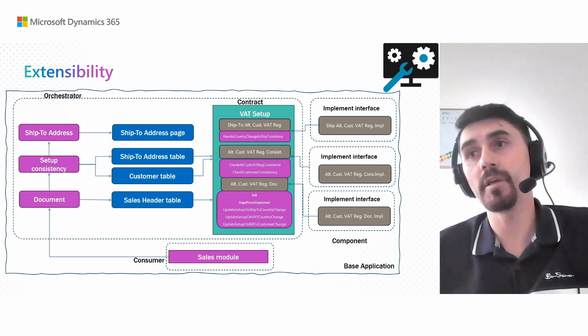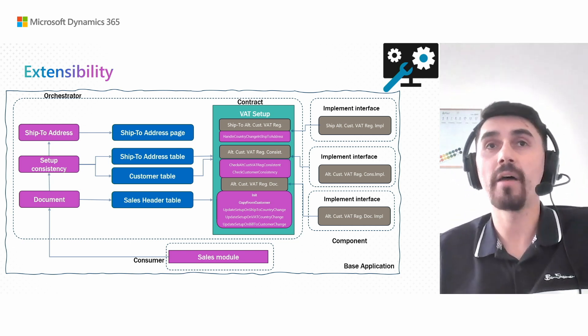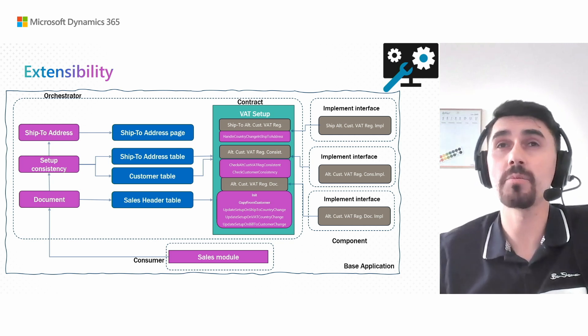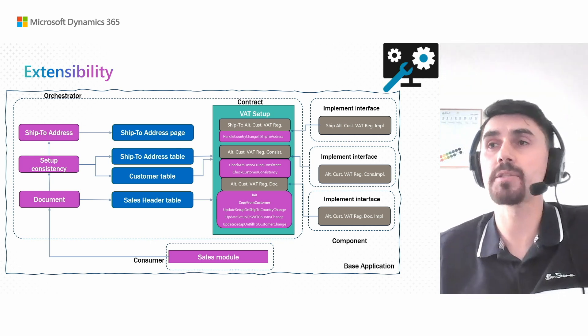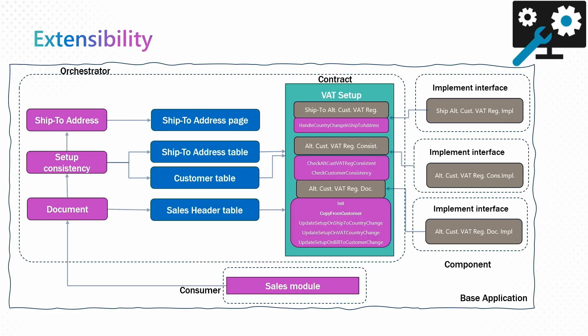The third and most important part is the document — everything happening in the sales header table. There is an interface called 'Alternative Customer VAT Registration Doc' with several methods: when we initialize the record, when we copy values from the customer, on ship-to address change, on VAT country region change, and on bill-to customer change — basically all the scenarios you can imagine in a sales document. If you want to change this logic, it is possible with this interface. As you can see, the whole feature is highly extensible, and you can change any part of it with your own interface implementation.